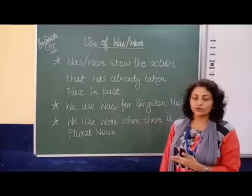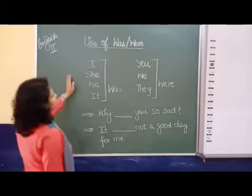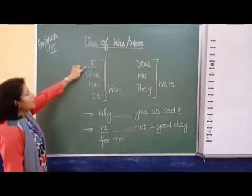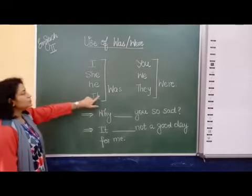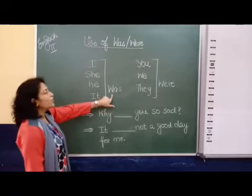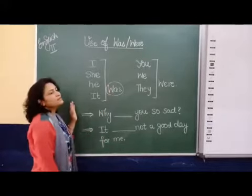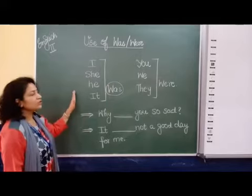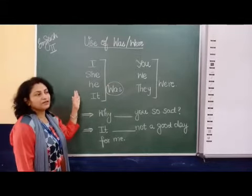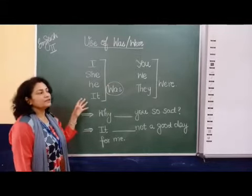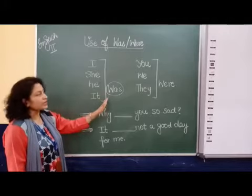Let us see some rules. I, she, he, it goes with 'was'. Here we will use 'was' because it is singular. We are talking about singular now. Even the name of any person, whether Amit or Sheila, we will still use 'was'.